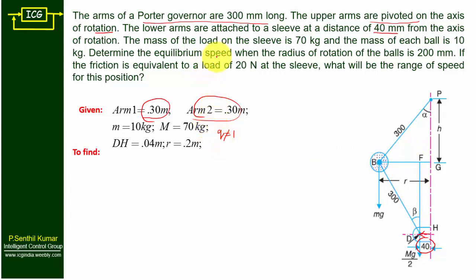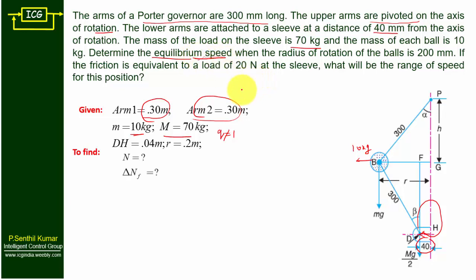The mass of the load on the sleeve is 70 kg, so there is a dead weight of capital M = 70 kg acting at this point. The mass of each fly ball is 10 kg, so small m = 10 kg. We need to determine the equilibrium speed — not maximum or minimum speed, but equilibrium speed, capital N. The radius of rotation of the ball is 200 mm, so r = 0.2 m. This is the mean radius of rotation for equilibrium speed.